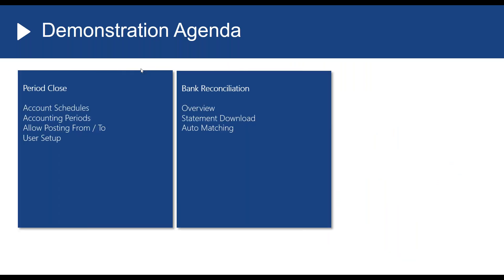Let's have a look at our demonstration agenda and see how we can use Microsoft Dynamics 365 Business Central to close off periods, get our month-end accounts out at the push of a button, and roll forward to the next period. It would also be useful to look at the bank reconciliation — this is one of the functional areas of the system that allows you to produce your month-end accounts at the touch of a button, by having an integrated bank ledger.